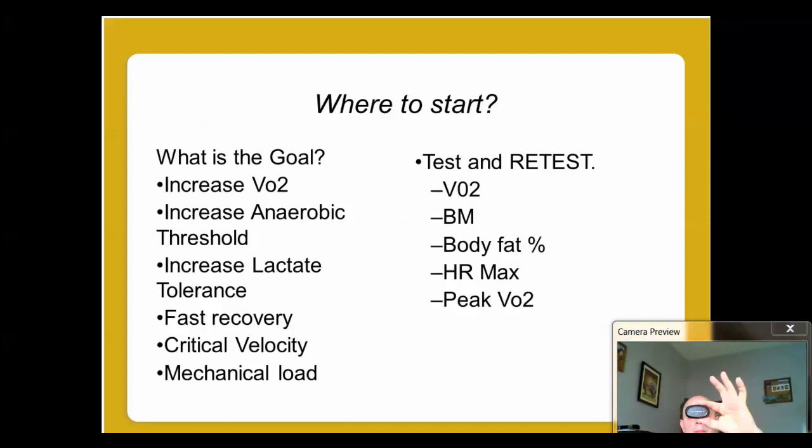We can test VO2 max, we can test critical velocity, we can test how fast they recover with many different types of devices. The first device I'm going to show you is an Omega Wave ECG sensor, which is a simple transmitter belt and a simple puck, an ECG sensor. And then we have a bioharness, which is a physiological sensor that has five different pieces of technology built into this strap. And then I'm also going to show you an accelerometer, which is going to measure the stiffness of the muscle.